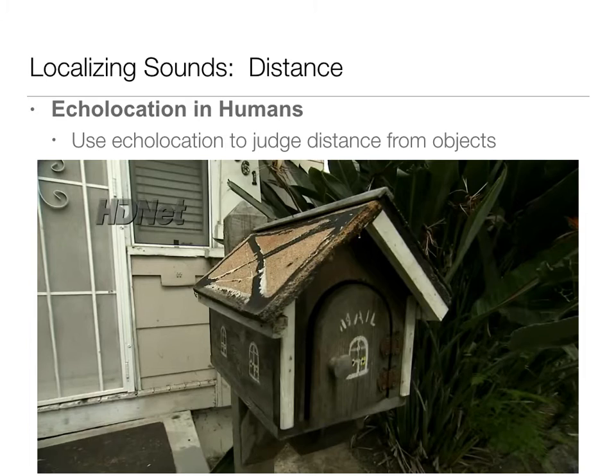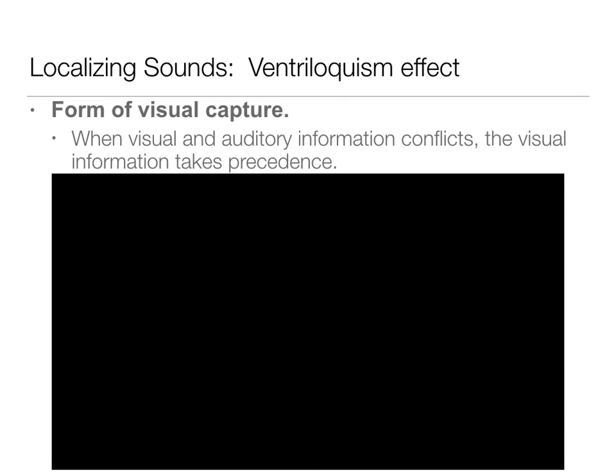Next we're going to start integrating senses back together. We've talked about vision by itself and audition by itself; now we'll put those things together. The ventriloquism effect is a form of visual capture — when visual and auditory information conflict, the visual information takes precedence. The brain says vision trumps sound. We all experience the ventriloquism effect in our everyday lives. Here's a video that shows different situations where we experience this effect.